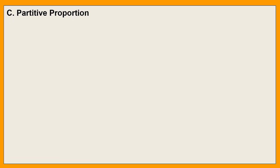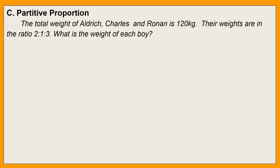The next one is partitive proportion. The problem here says: the total weight of Aldrich, Charles, and Ronan is 120 kilograms. Their weights are in the ratio 2 is to 1 is to 3. What is the weight of each boy? So given natin dito is total weight ng tatlo ay 120 kilograms, at ang ratio is 2:1:3. Ibig sabihin, 2 parts ang para kay Aldrich, 1 part ang para kay Charles, 3 parts ang para kay Ronan.